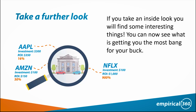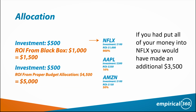But if you could look inside and see what they did, you could do some optimization. Let's say you invested $300 into Apple stock and got a 16% return, $100 into Amazon and got a 50% return, and $100 into Netflix and got a 900% return. If you invested all of your money into Netflix — which yielded a 900% return — you'd take your $1,500 earnings and bump it up to $5,000. That's a much better ROI.